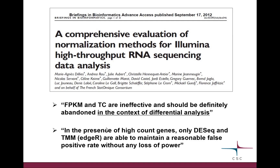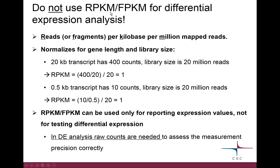Comparison articles show that DESeq2 and edgeR do quite a good job at normalization, whereas the FPKM method should actually be avoided. FPKM stands for fragments per kilobase per million mapped reads — RPKM is essentially the same thing except RPKM is for single-end reads and FPKM is for paired-end.